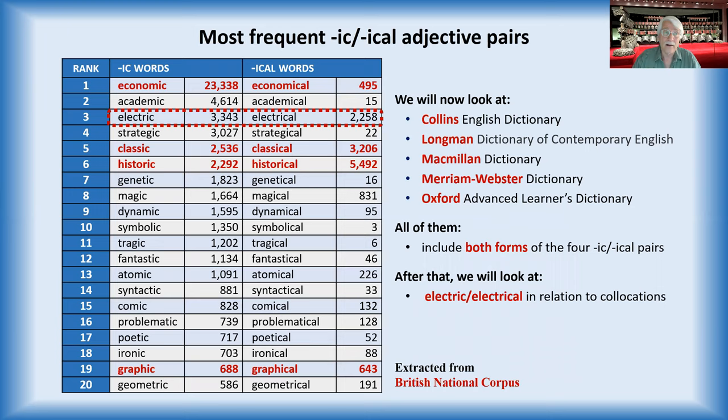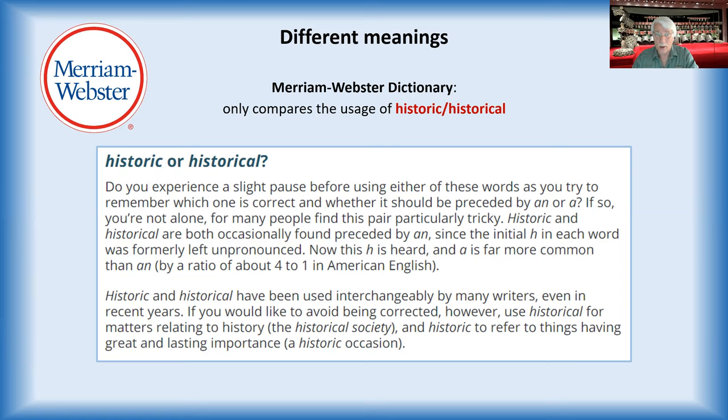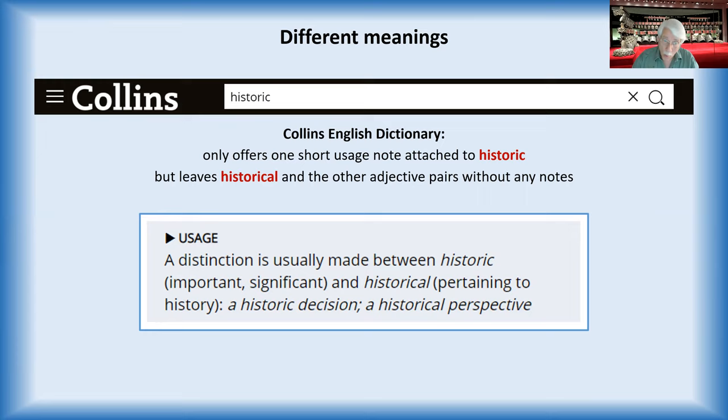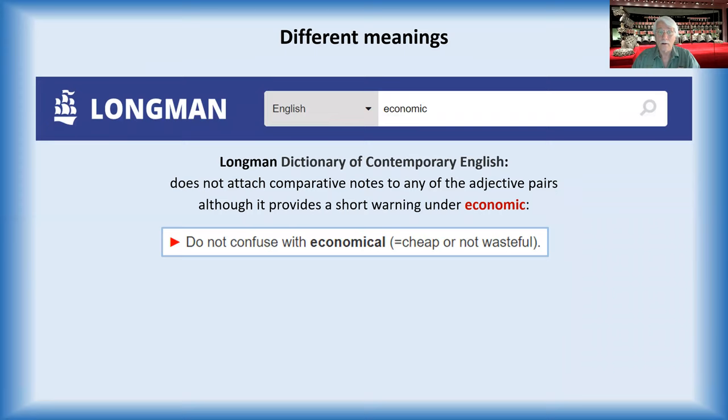Here we see a note coming up in Merriam-Webster. It's the only note they have for these adjective pairs. And we can see it's quite descriptive. Here we see also a small one from Collins. They only have historic, not even historical, but it's also a little descriptive. Here we have another very short one from Longman. They only have it under economic, not economical, but they at least tell the user to not confuse that word with economical.